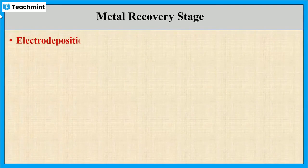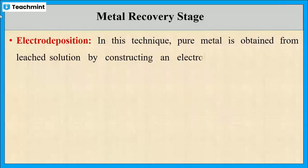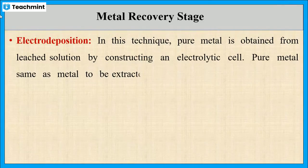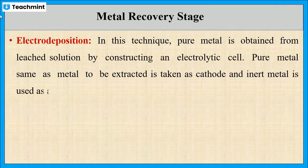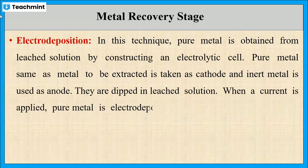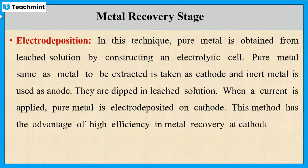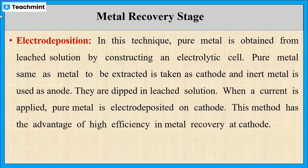Another method is electroplating. For this, an electrolytic cell is constructed using a pure sample of the metal to be extracted as the cathode and any inert metal as the anode. The electrodes are dipped in the leached solution, and when current is applied, pure metal is electroplated onto the cathode.